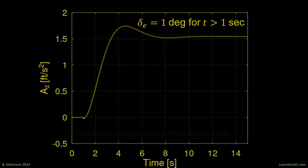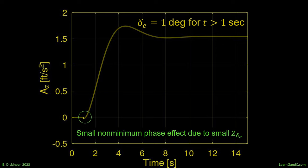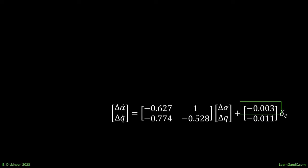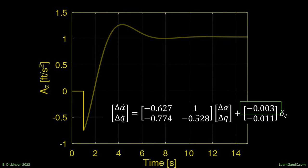So, when we take their sum and compute the AZ step-response, we see the small non-minimum phase dip due to small Z del E. Scale it up 30 times. And we get the point. Depending on how severe the non-minimum phase dip is, it can add to the rise time and, therefore, decrease the performance of the aircraft under acceleration control.